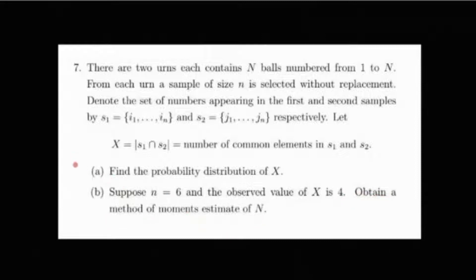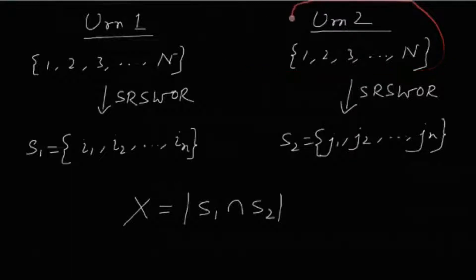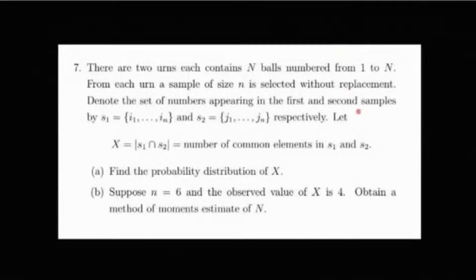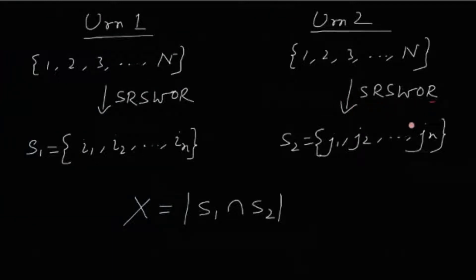Let us first focus on finding the probability distribution of X. There are two urns, urn 1 and urn 2, each containing exactly the same balls numbered 1 through N. From urn 1 a sample S1 has been taken using SRSWOR, and from urn 2 a sample S2 has been selected using SRSWOR. X denotes the number of elements common to both samples.